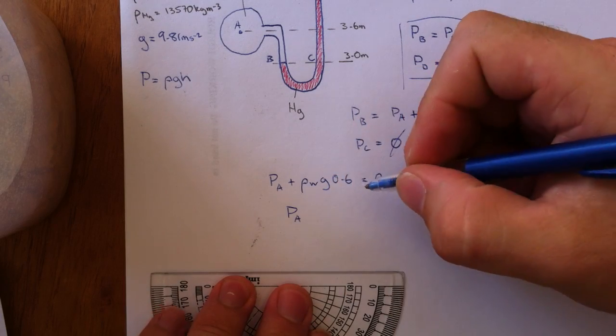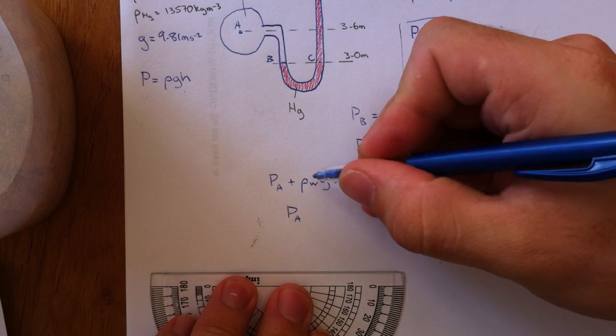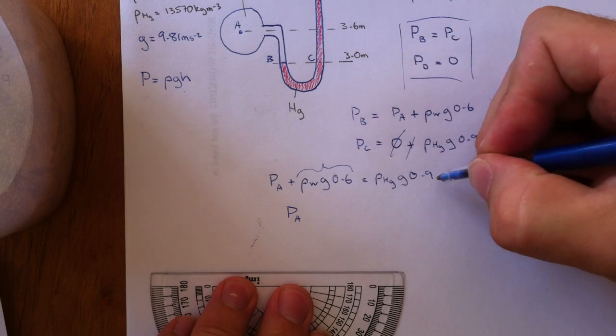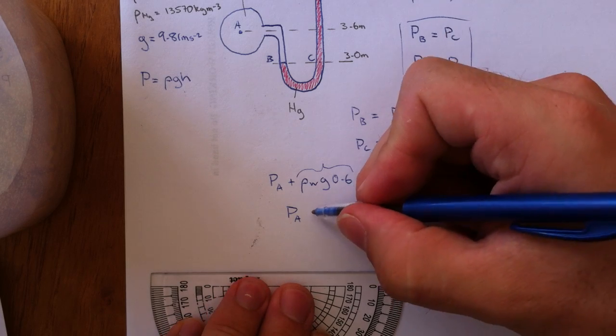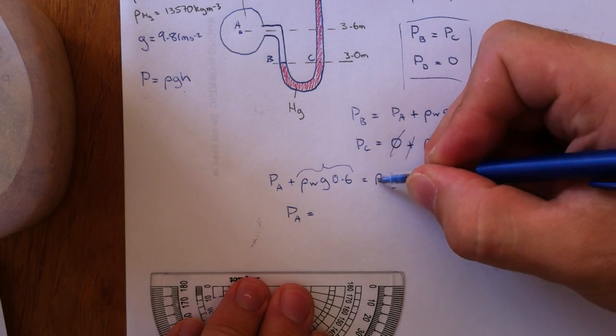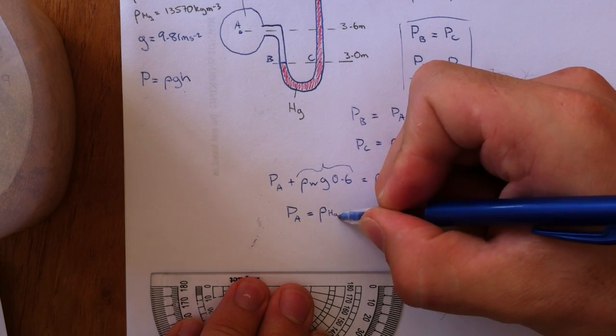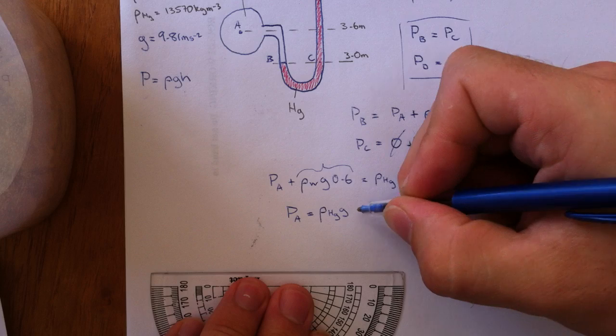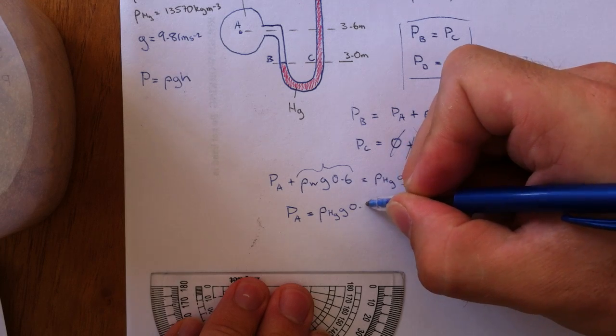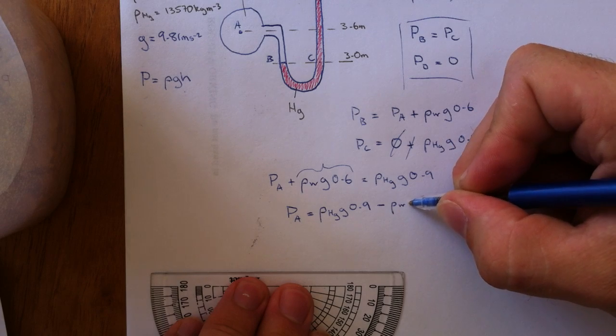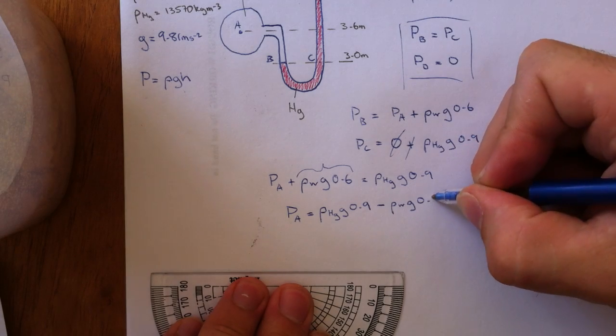Pressure at A equals this side minus that side because we're just bringing that whole term over to this side. So it's going to be pressure at A equals this minus that. So density mercury, gravitational 0.9 minus density water, gravity 0.6.